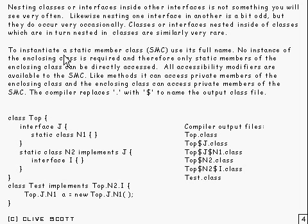To instantiate a static member class — which I'll abbreviate as SMC — what you do is use its full name. You don't have to have any instance of the enclosing class; it's not required at all. Therefore, the static member class can only directly access the static members of the enclosing class.